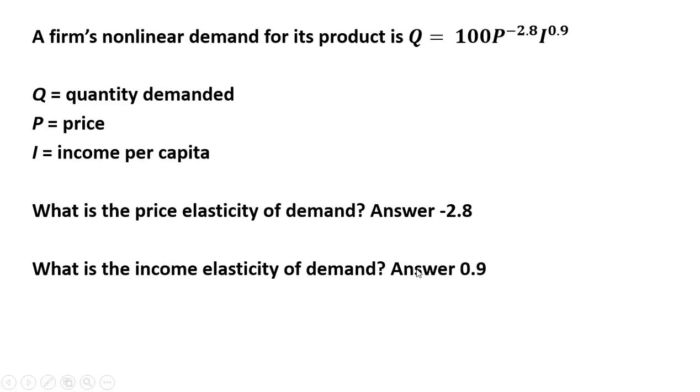The income elasticity of demand, the quick and dirty way to solve this is, given this functional form, the income elasticity of demand is the exponent on the I term, or 0.9. Now, I'll show you the more detailed way of solving this and proving this.